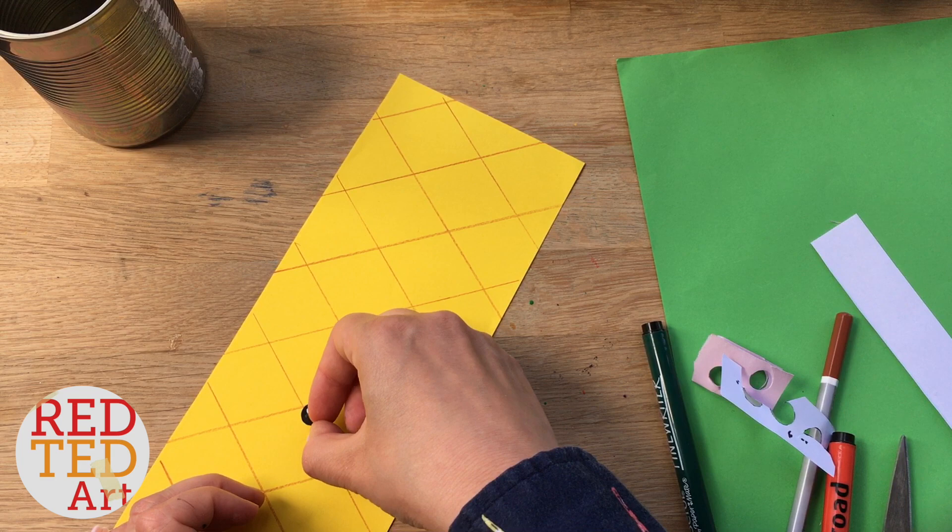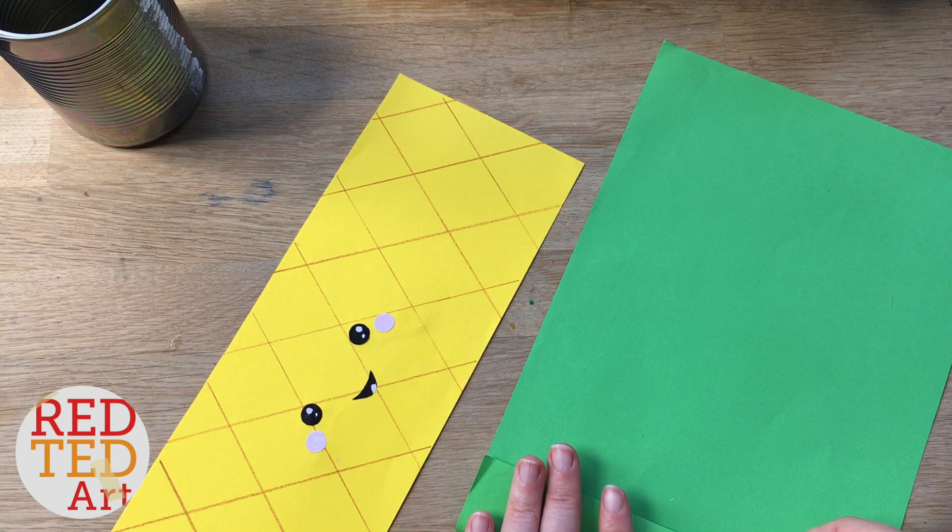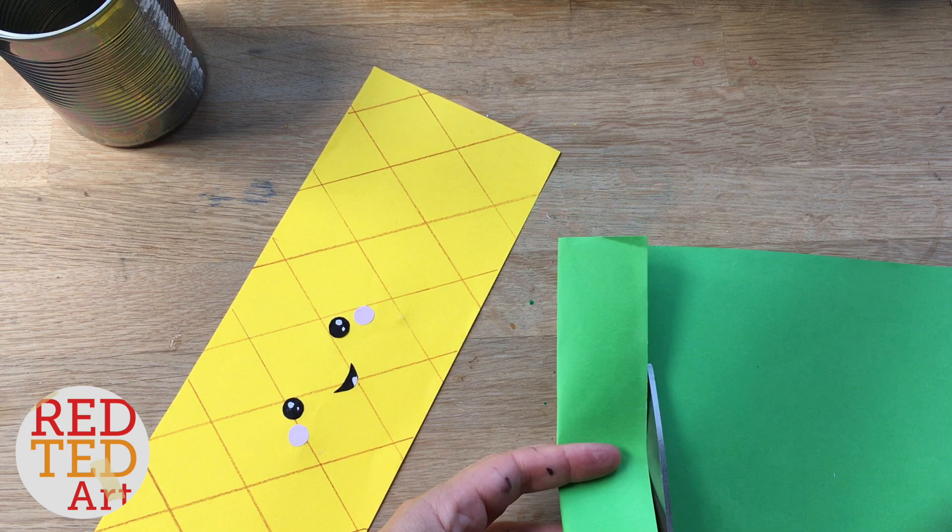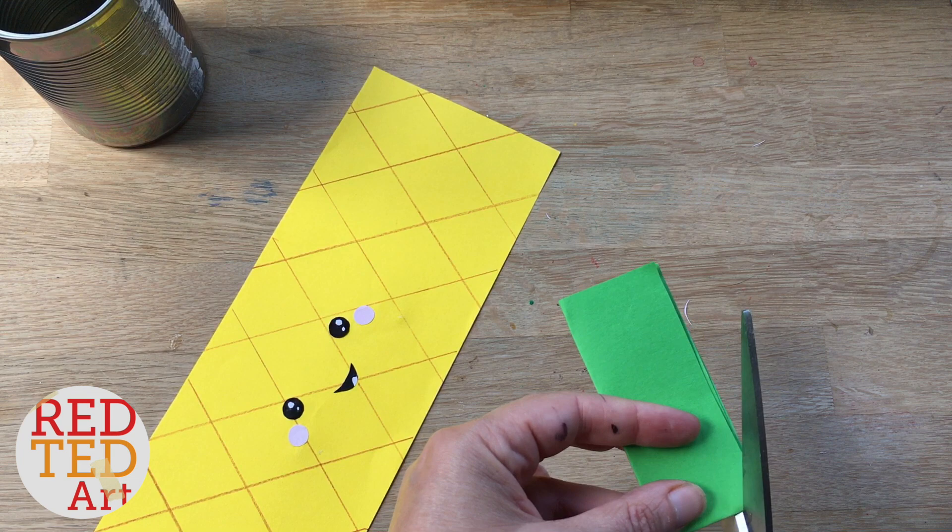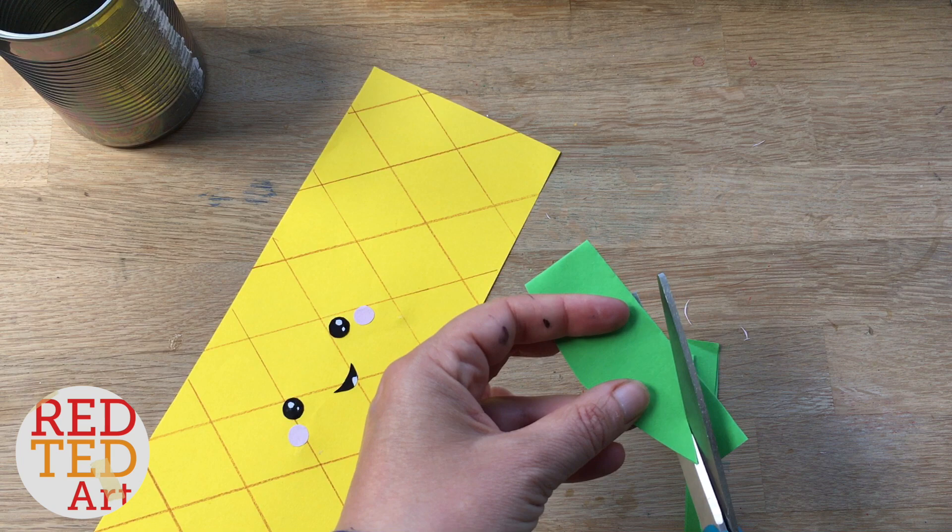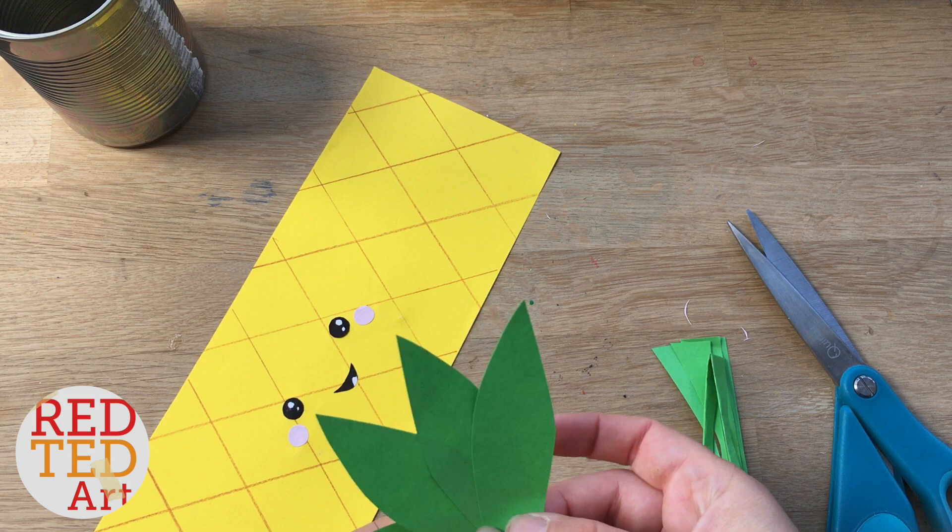Right, now all we need is the pineapples and leaves. So to do that I'm going to fold this in half, well not in half, just fold it over. I'm going to cut out four leaves at the same time. So again fold this in this way. So these are just a leaf shape.